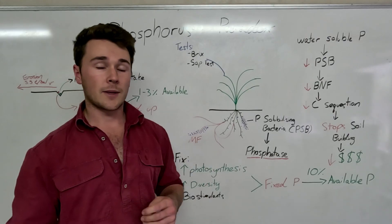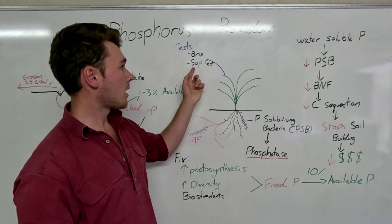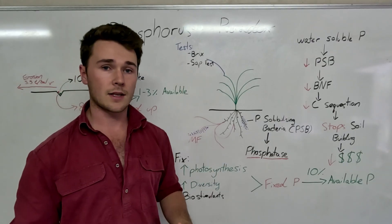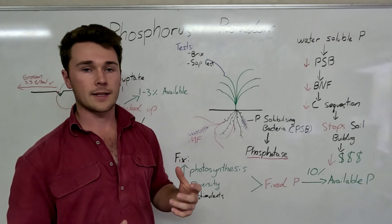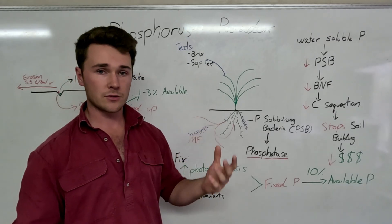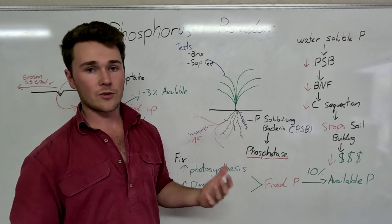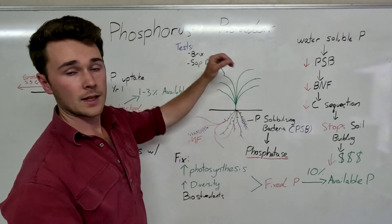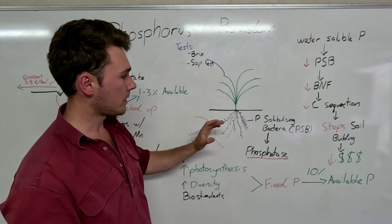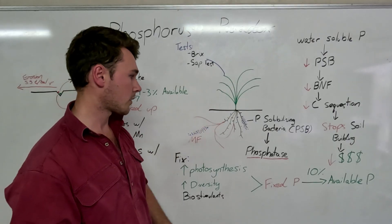Now we can also make sure we're not going to run into a deficiency by again using our sap test. We do sap tests. So if you want to get one done, get in contact with us to assess whether or not your plants actually have enough phosphorus. If they don't, we would recommend a foliar spray as the foliar spray will come along, just get on the plant. It's more efficient that way and won't be disturbing any of our soil microbes.